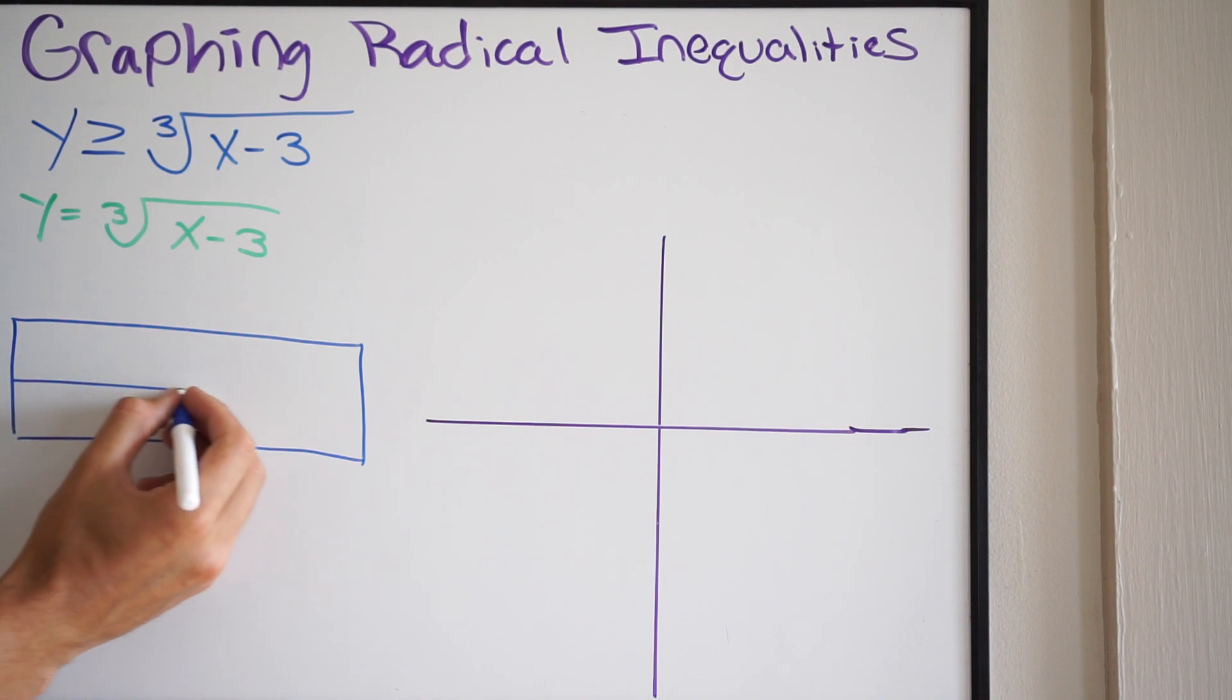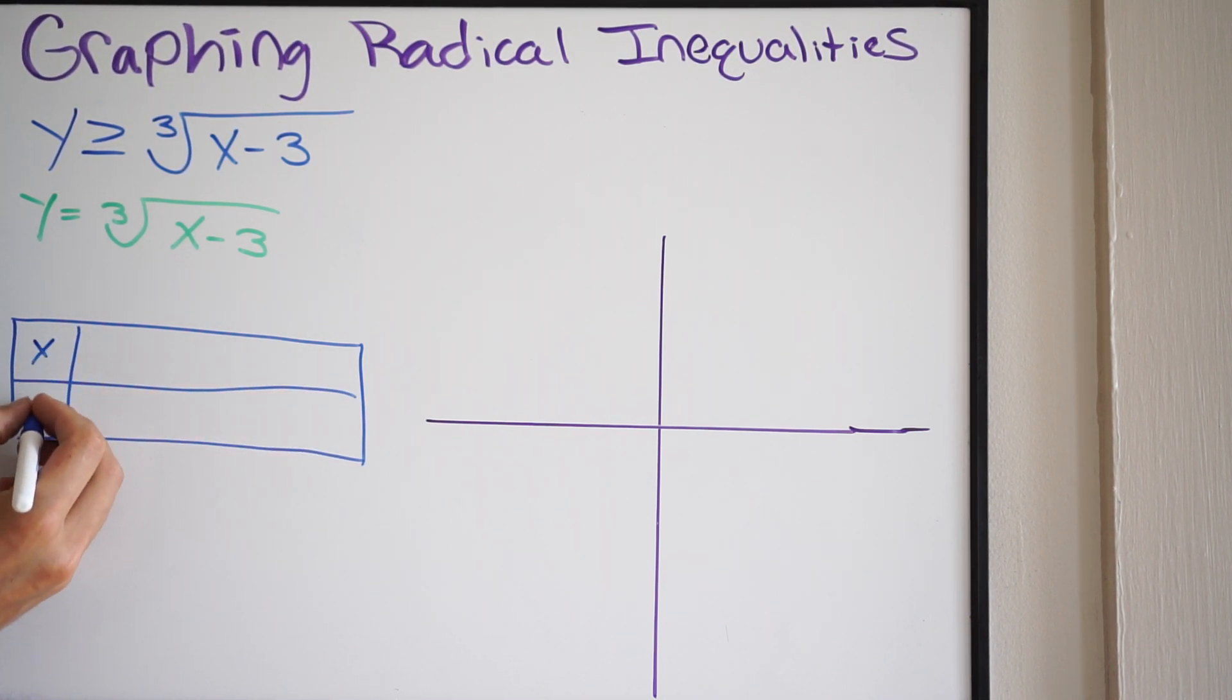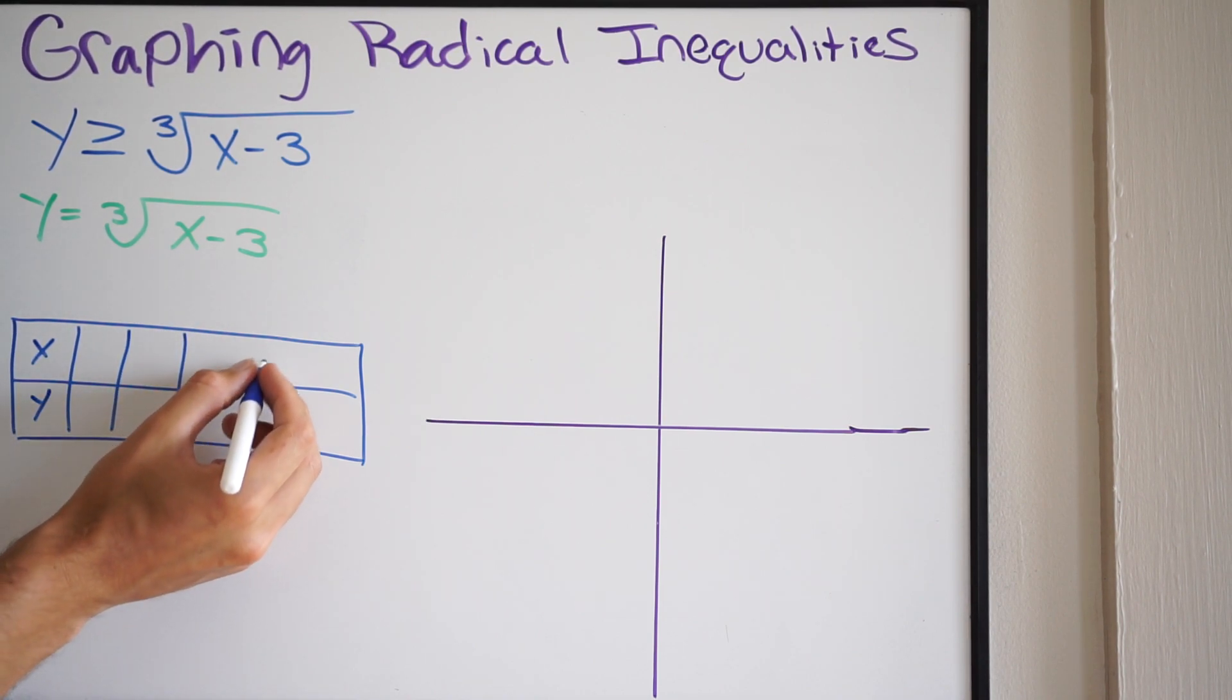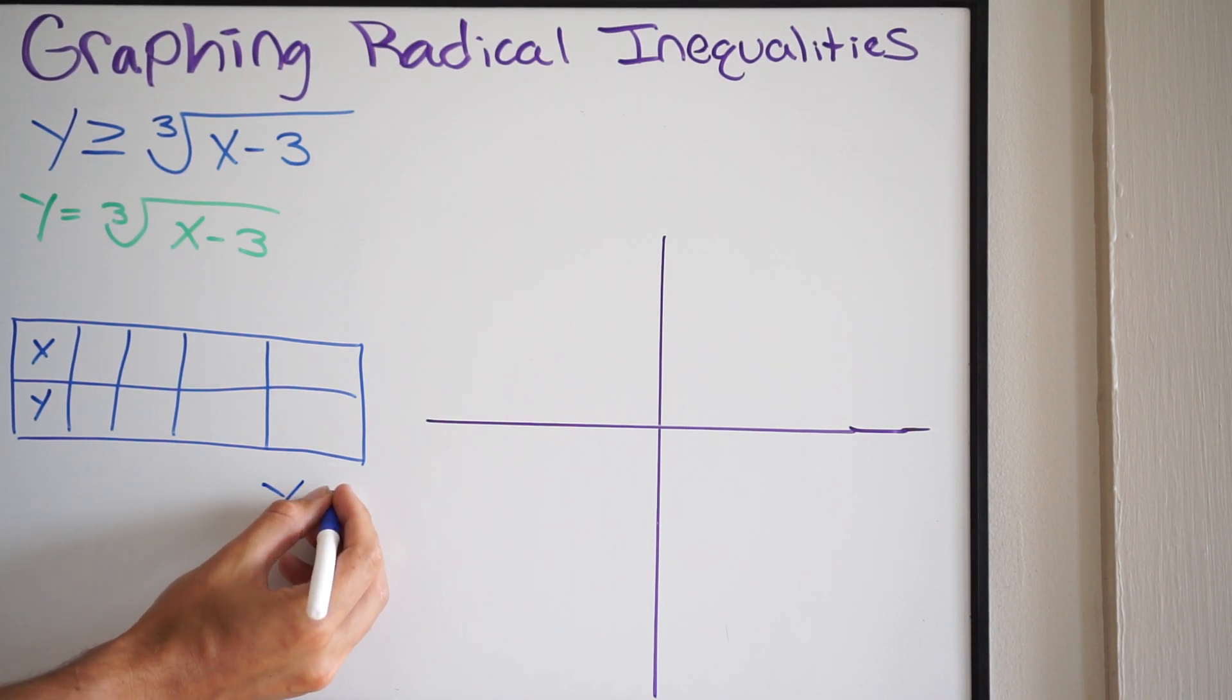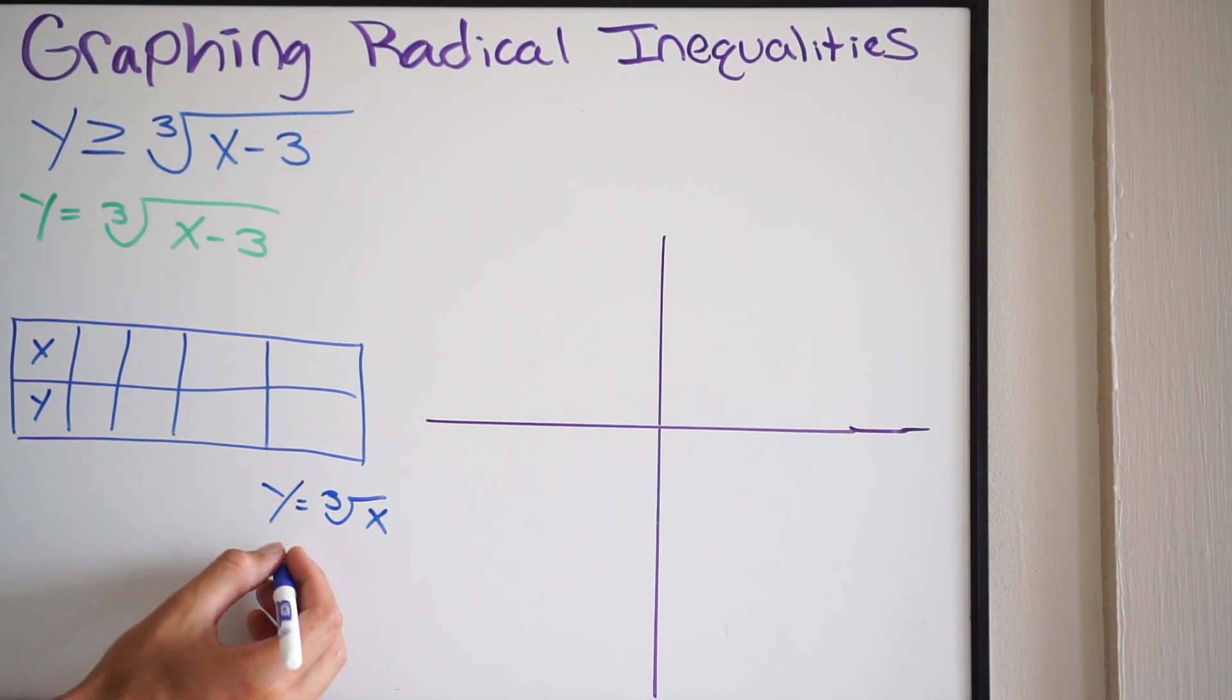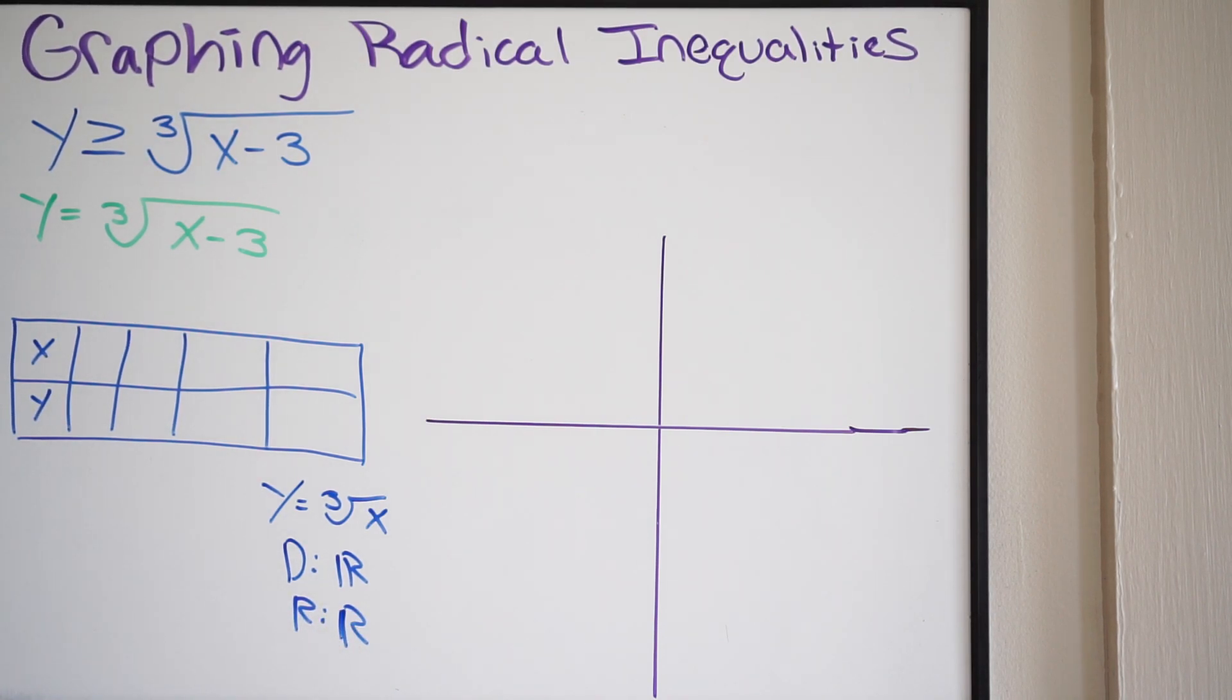So again, we'll just pick like four points, and that will be sufficient to go ahead and graph what we have. Alright, now before we graph, let's first talk about the domain and range here. So remember, go back to your parent function, which is going to be y equals the cubed root of x. Well, we've determined in past videos that the domain and range here is going to be all real numbers. So our domain is going to be all real numbers, and our range is going to be all real numbers.